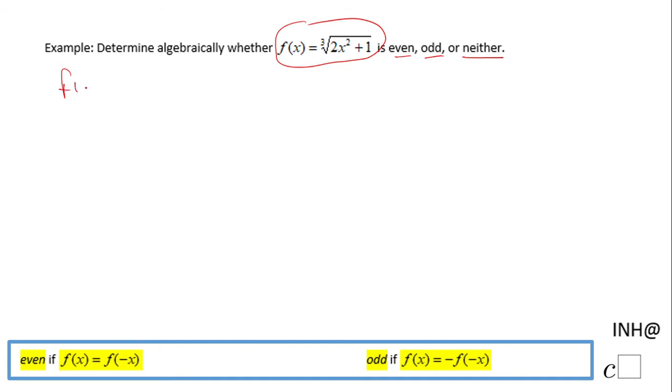My first way to look at this function will be a numerical way. I'm going to do f(2), and then I have cubic root of 2 times 2² plus 1, which becomes cubic root of... 2² is 4, times 2 is 8, plus 1, that will be 9. Cubic root of 9.